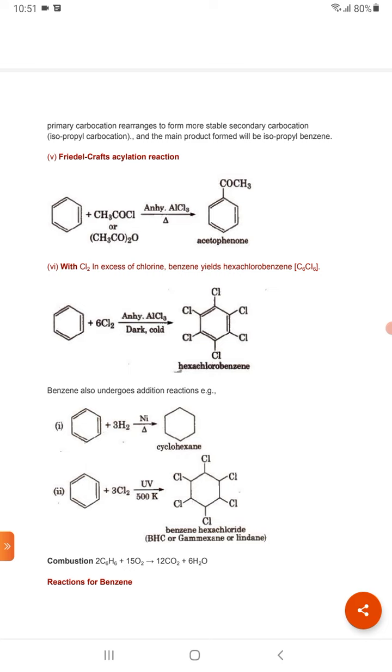Again benzene is reacted with 3 moles of chlorine. Then it will give benzene hexachloride and it is also known as BHC or gammaxane. And the formula will be C6H6Cl6.